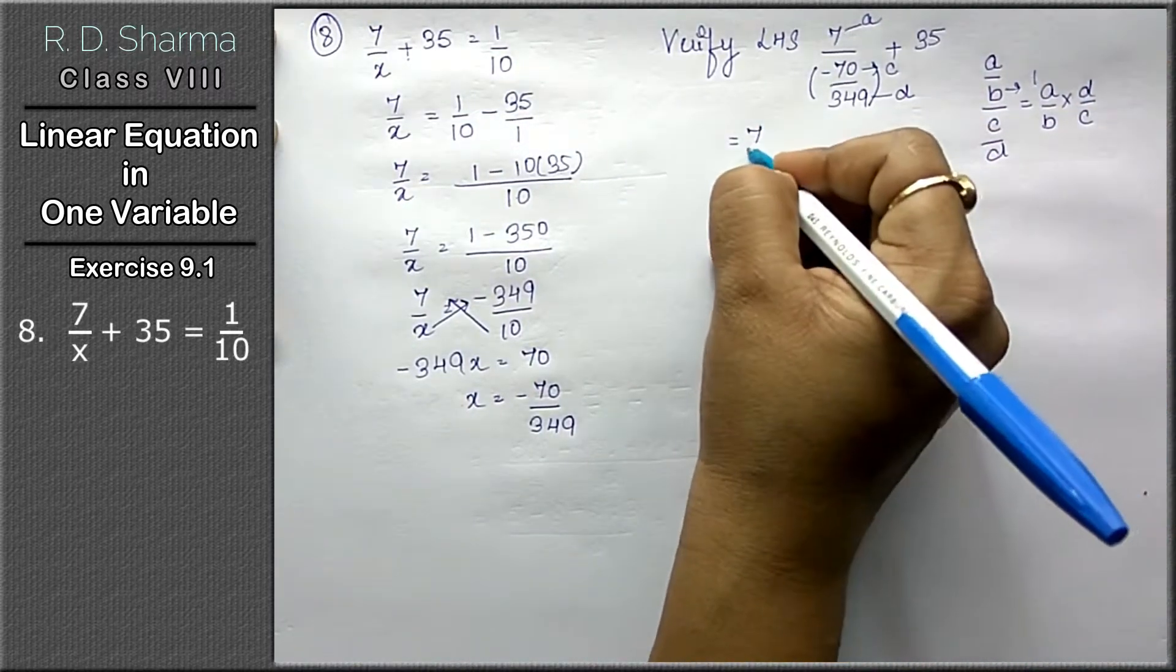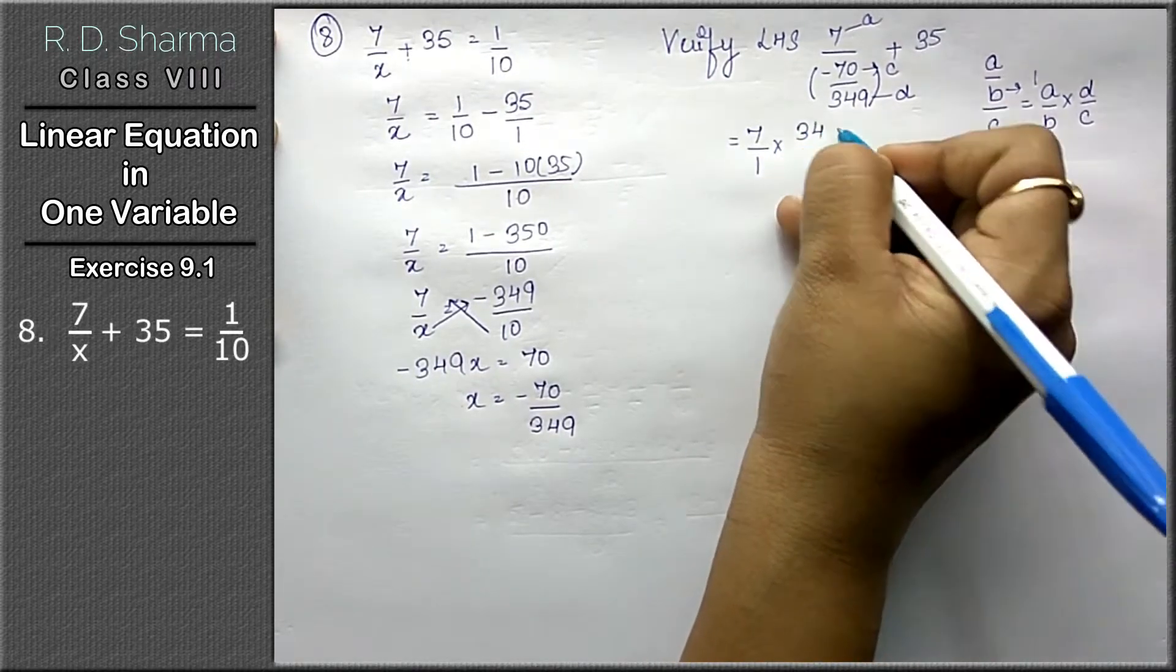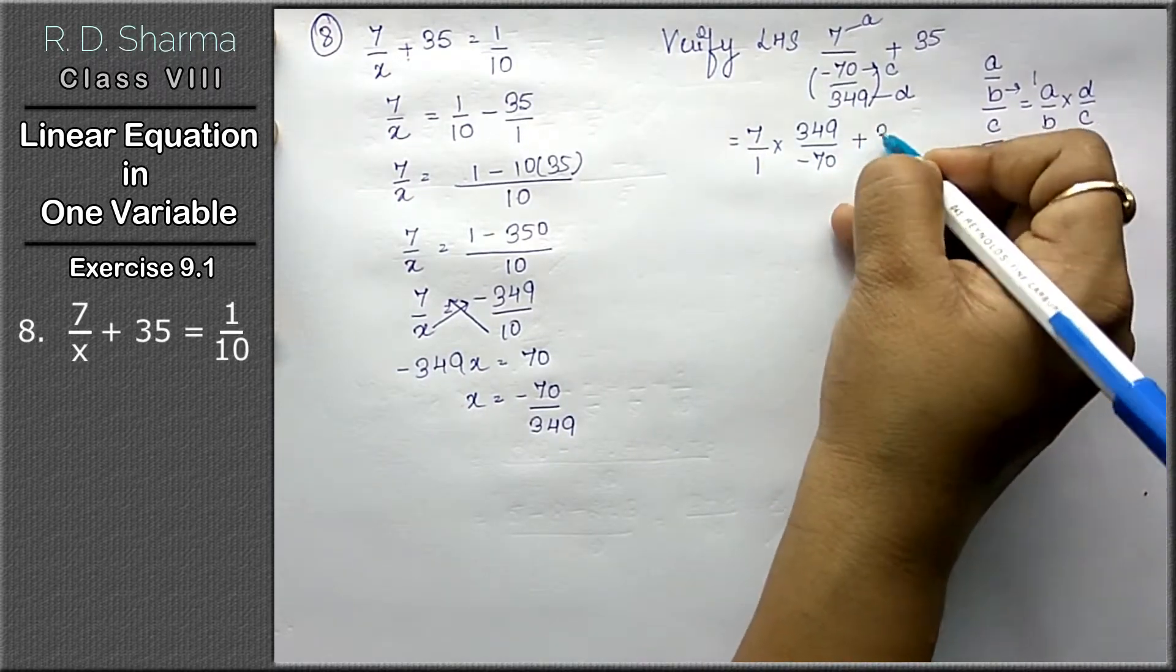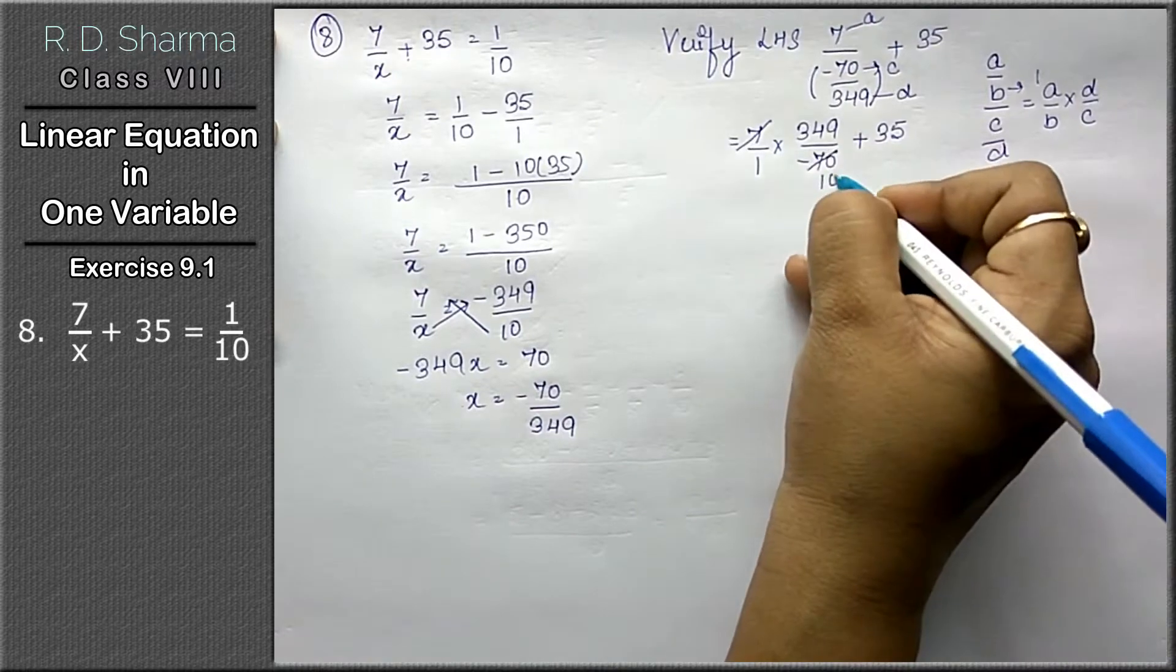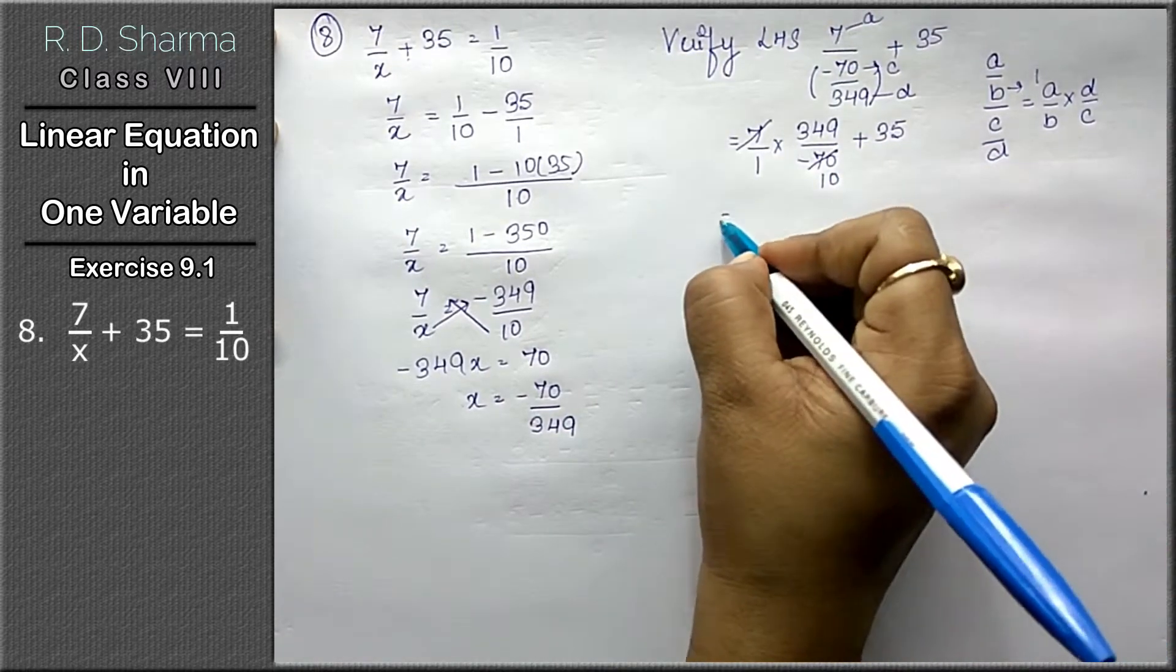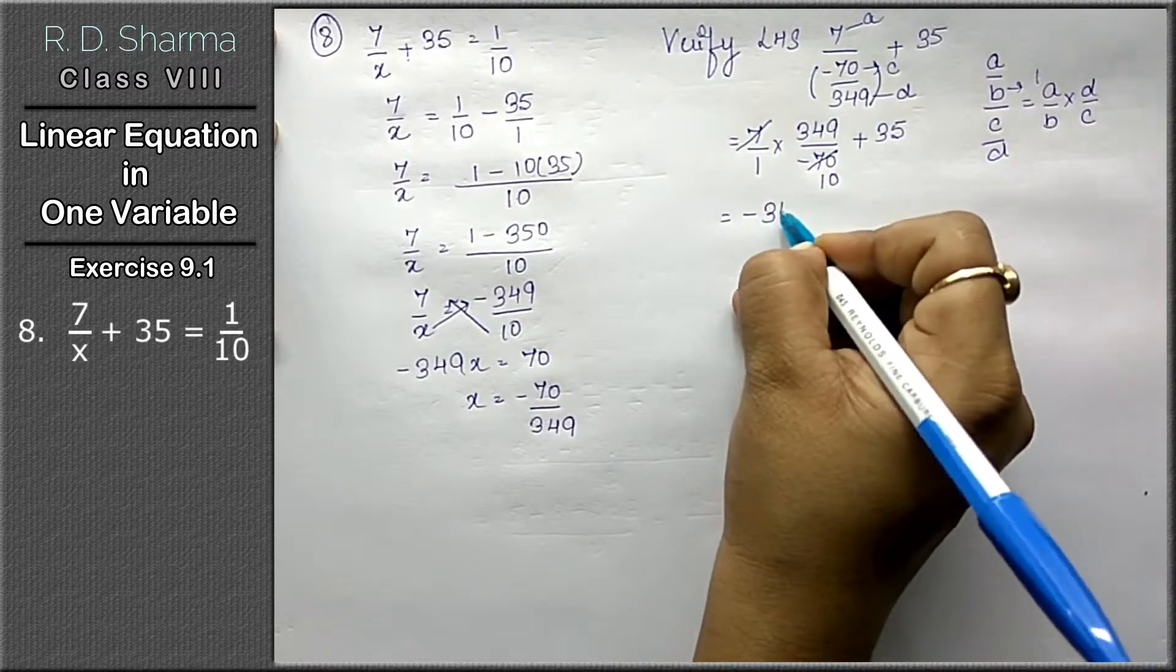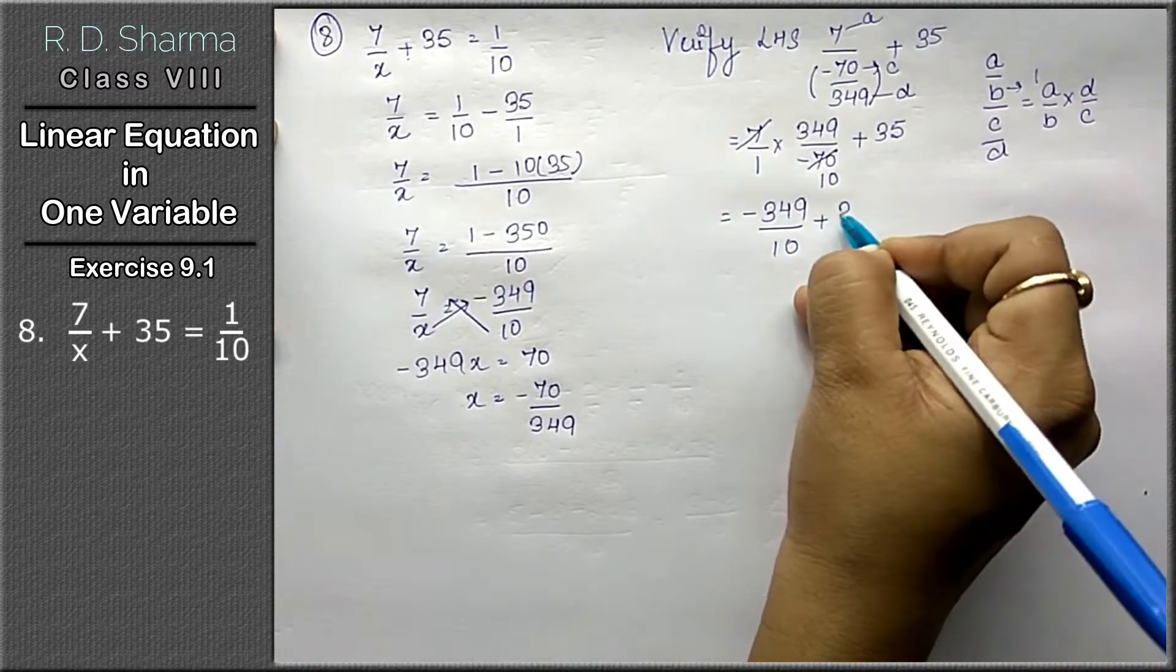Then how we will write: 7 upon 1 into 349 upon minus 70 plus 35. 7 1s are 7, 7 10s are 70. That means minus 349 upon 10 plus 35.